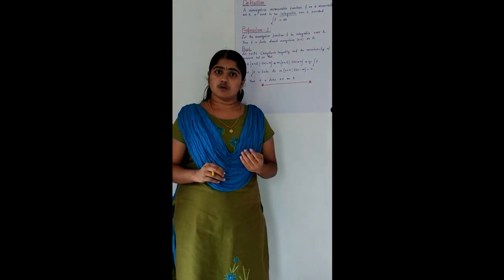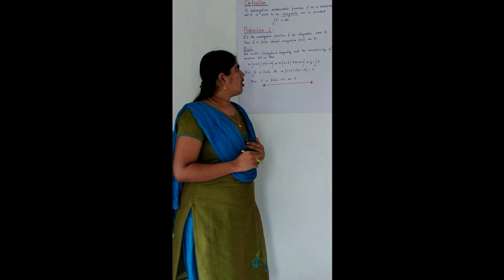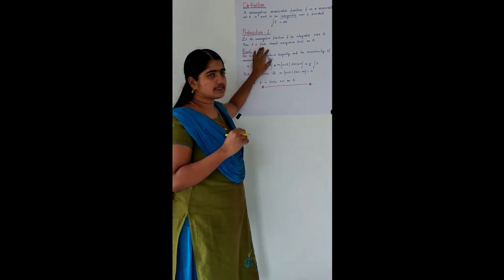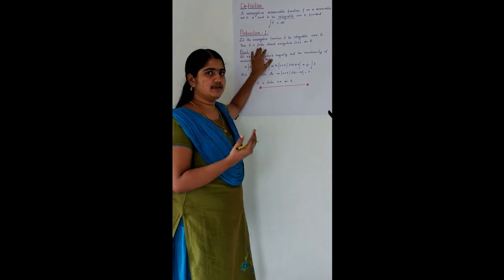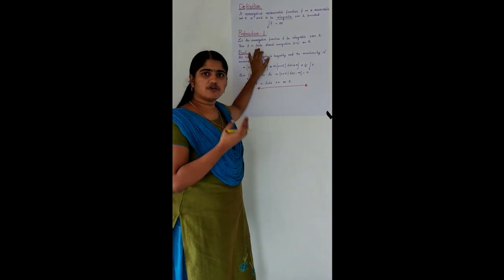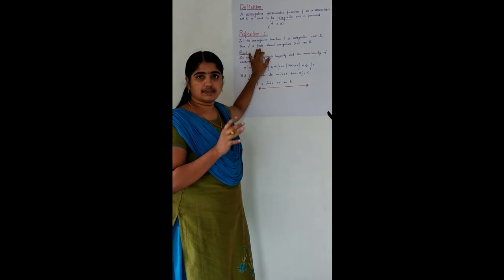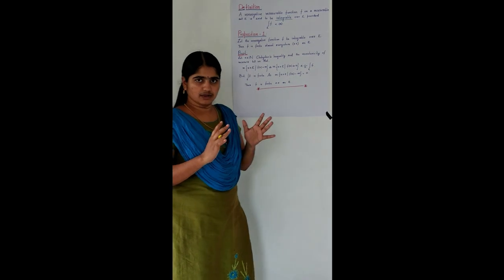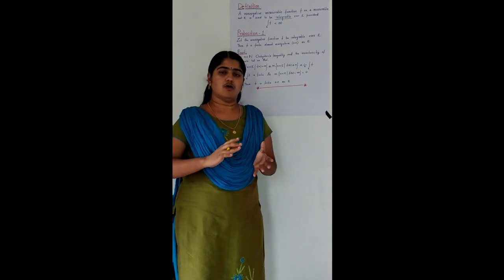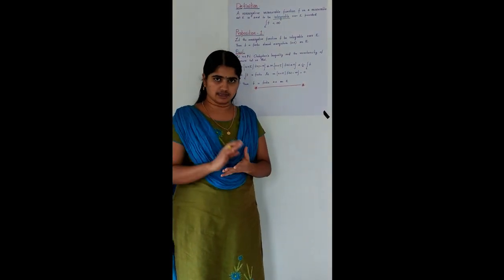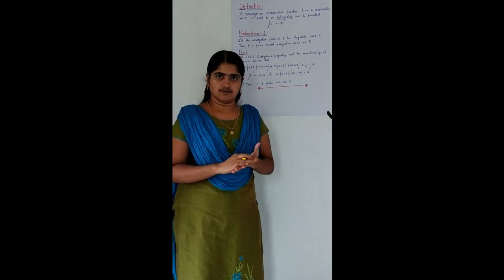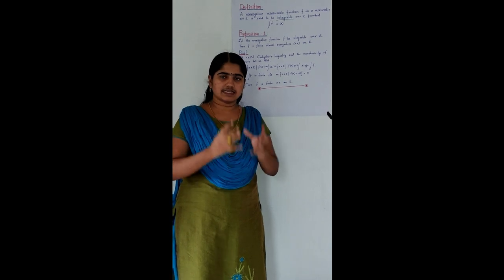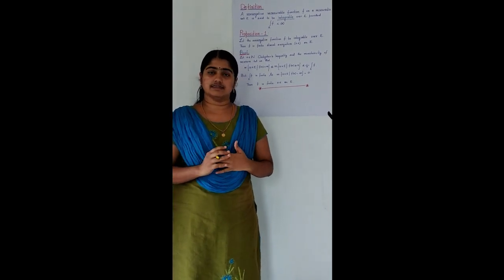What do we mean by almost everywhere on E? Almost everywhere on E means that property which does not hold on a set — you collect that set — and the measure of that set is zero.